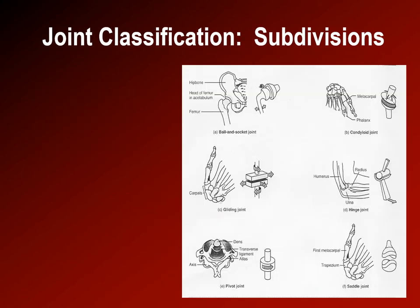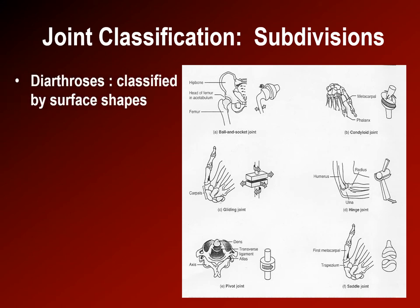The final type of joint is the diarthrodial joint. Diarthrodial joints are characterized by having two surfaces of hyaline cartilage that are meant to move across each other. One type is a gliding joint — as the name describes, the joint surfaces can glide across each other in a variety of directions — an example being the intracarpal joints of the hand.